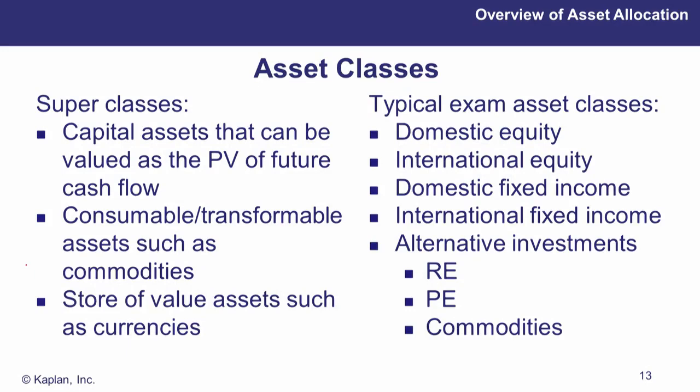Earlier we talked about super asset classes — it's impossible to have a wider definition than capital assets, consumables, and stores of value. Capital assets would be things like equities and bonds, which can be valued as the present value of future cash flows. A share can be valued based on the present value of future dividends discounted at the investor's required rate of return; likewise with bonds — present value of future coupons and principal redemption discounted at the market's yield.